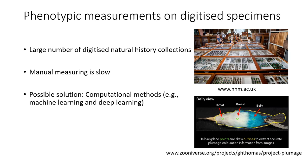The digitization of natural history collections has been underway for a while. Digitized specimens enable researchers to make non-invasive, easy-to-reuse measurements. But due to the large amount of digitized specimens, it is time-consuming and tedious to measure them manually. These are measurements from a citizen science project about quantifying bird plumage color. Manually measuring hundreds of thousands of these images can take a long time.